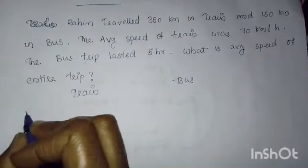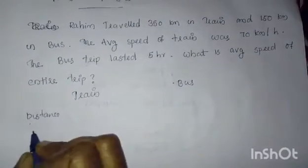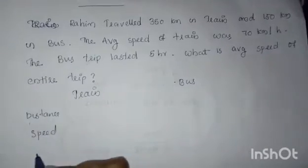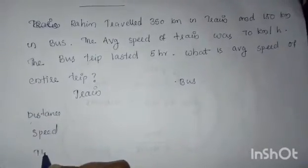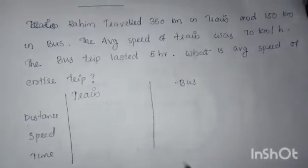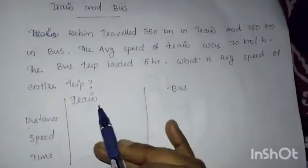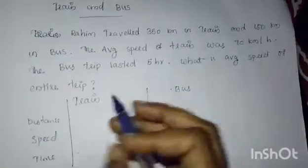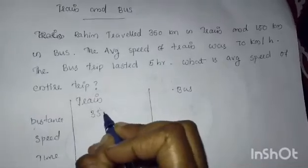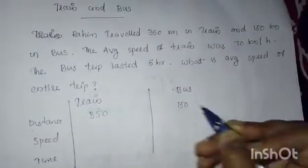We can set up a table with rows for distance, speed, and time. The distance traveled by train is 350 km while the distance by bus is 150 km.